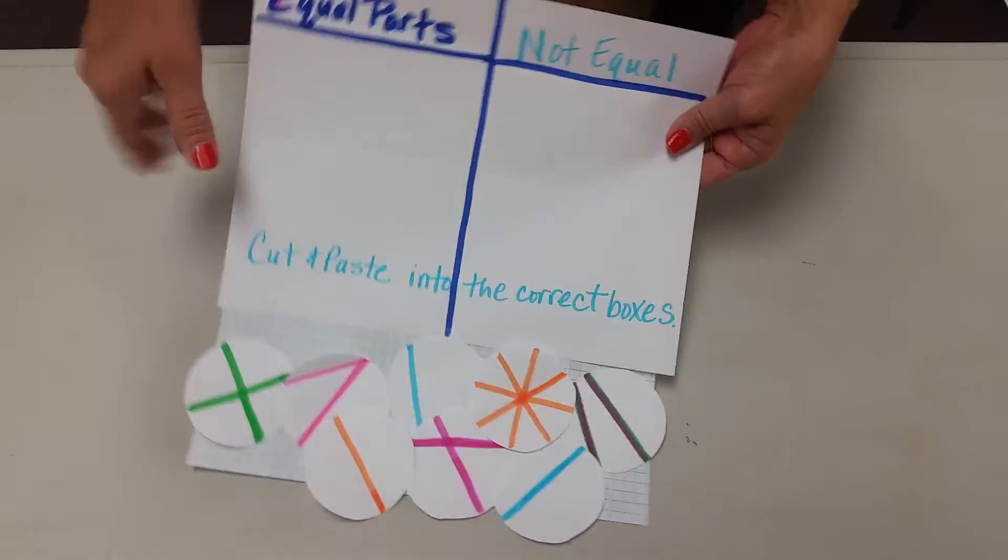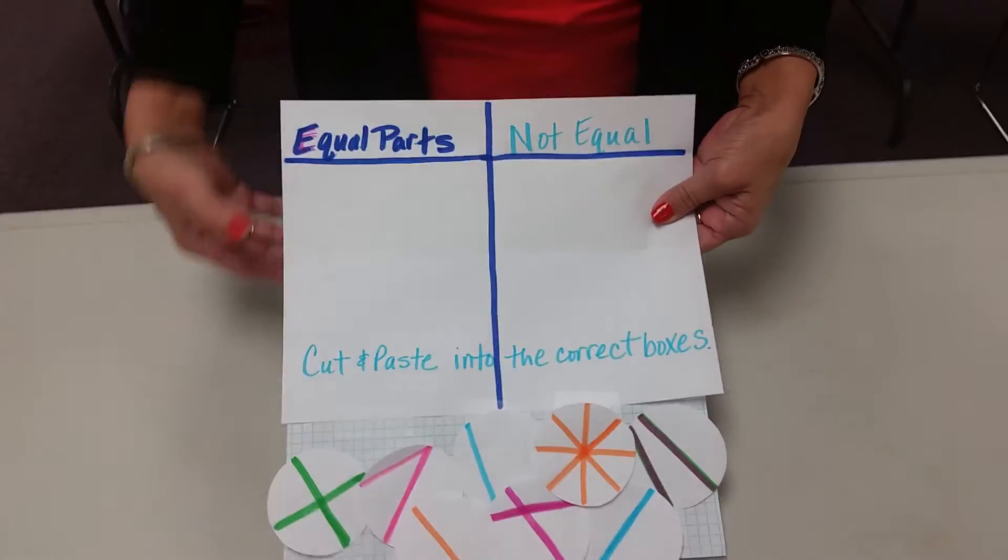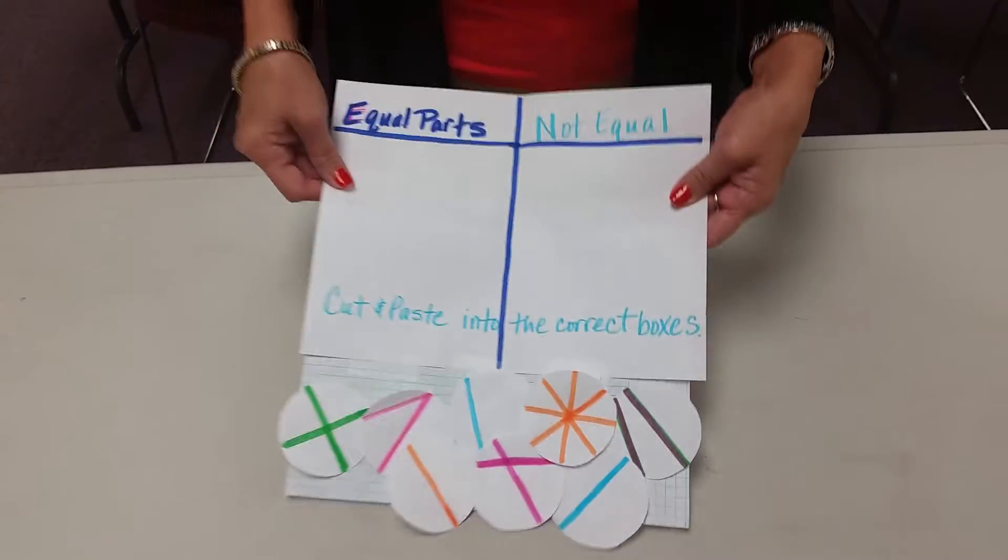Fold it over horizontally. As you can see, I've got two sheets - one is plain, one has graph paper. I fold it over in equal parts.